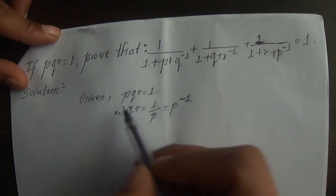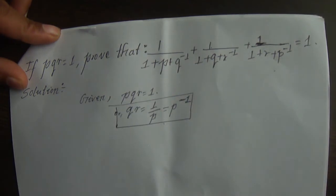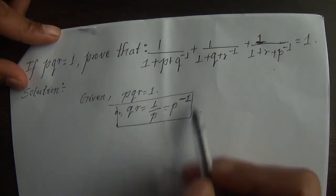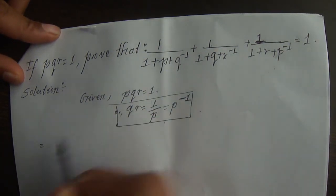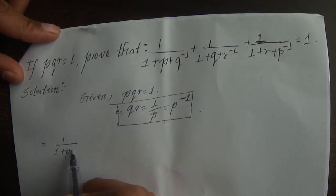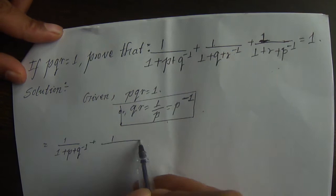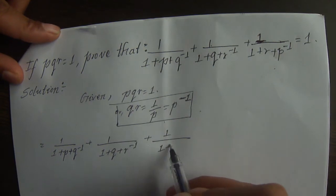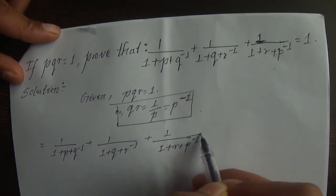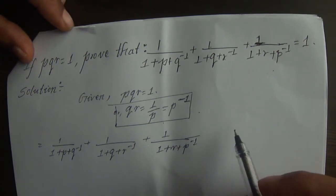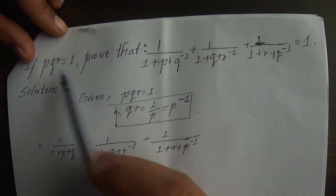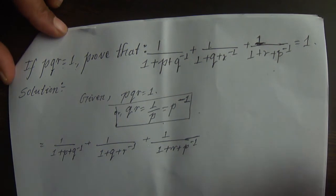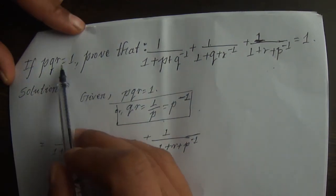This is P inverse: 1 by 1 plus Q plus R inverse, plus 1 by 1 plus R plus P inverse. In the first term, this is P inverse plus is equal to 1. This is not about PQR is equal to 1. This is P plus Q plus R inverse plus is equal to 1. This is P plus Q plus R inverse plus is equal to 0.